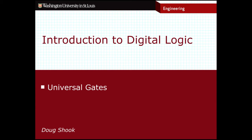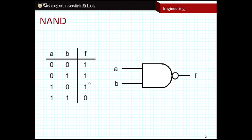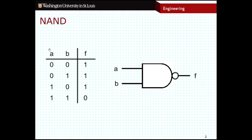The first logic gate I want to talk about is a NAND gate. The symbol for a NAND gate is an AND gate with an inverter attached to the output. NAND actually stands for NOT AND — the inverse of AND. If you look at the truth table, the output is the opposite, the complement, of an AND gate.